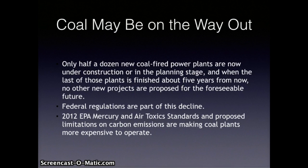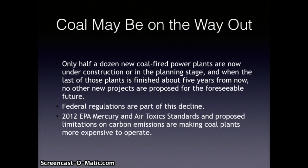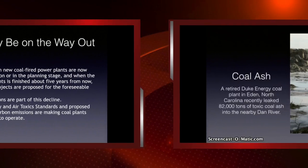In 2012, the EPA also proposed limiting carbon emissions from power plants. If this rule goes into effect, new facilities will be allowed to emit no more than 1,000 pounds of carbon dioxide per megawatt hour of electricity produced. Natural gas plants can easily meet that standard, but it's about half the amount released by the average coal-fired power plant. The only way to meet this limit with coal is to install expensive carbon capture and storage equipment. As of spring 2015, the U.S. Supreme Court was still hearing cases that may invalidate or modify the EPA carbon emission rules.